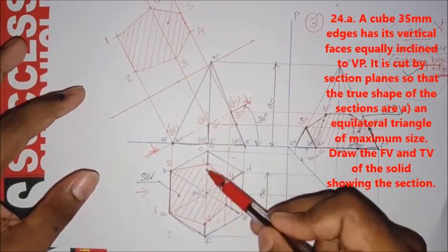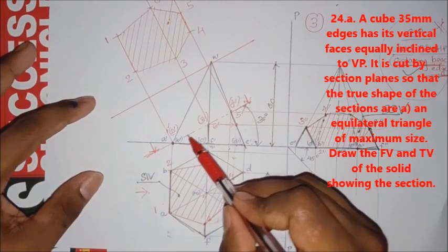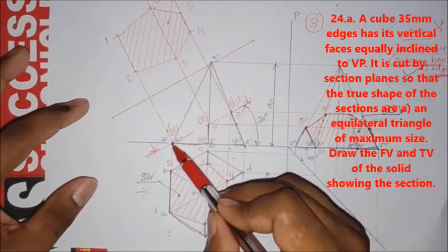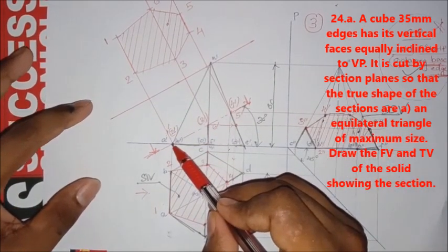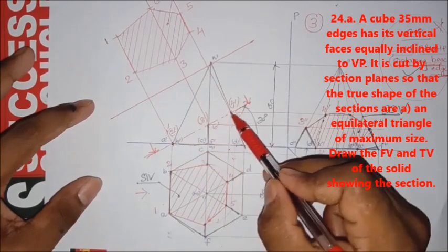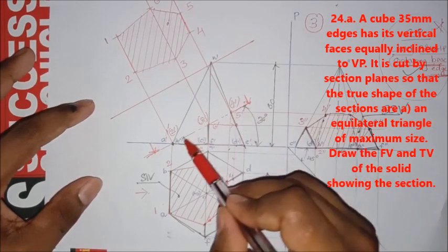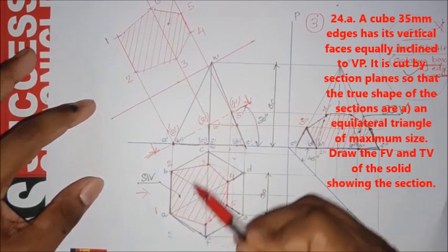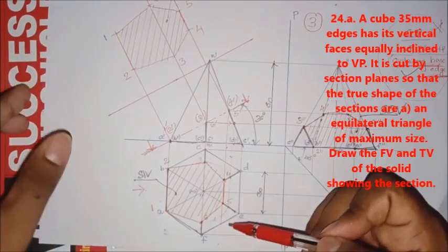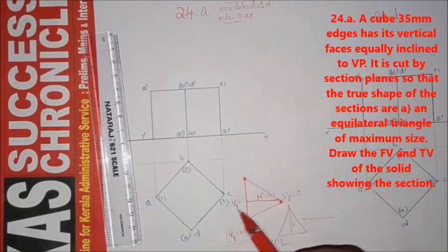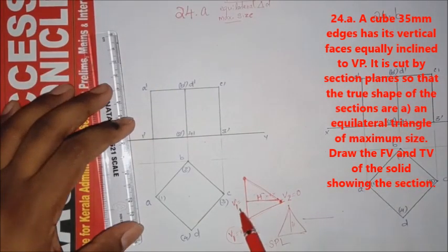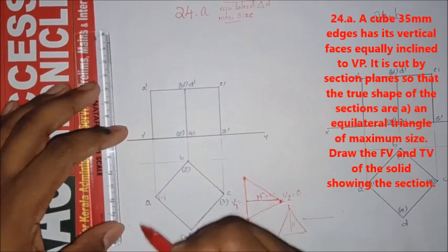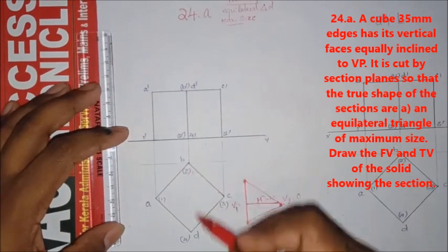We will fix the section-plane length. If you want to fix each section-plane length, drop the same length with that section-plane length. This is how you fix the section-plane length. Similarly, here we can fix the whole section-plane length. We fix V1, V2, V3 here.